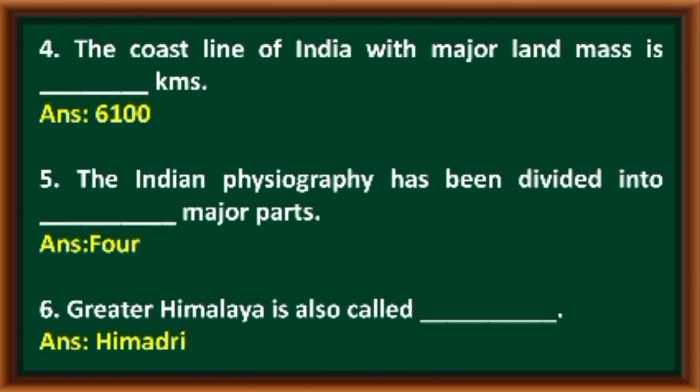The coastline of India with major landmass is 6,100 kilometers. The Indian physiography has been divided into 4 major parts. The Greater Himalaya is also called Himadri.